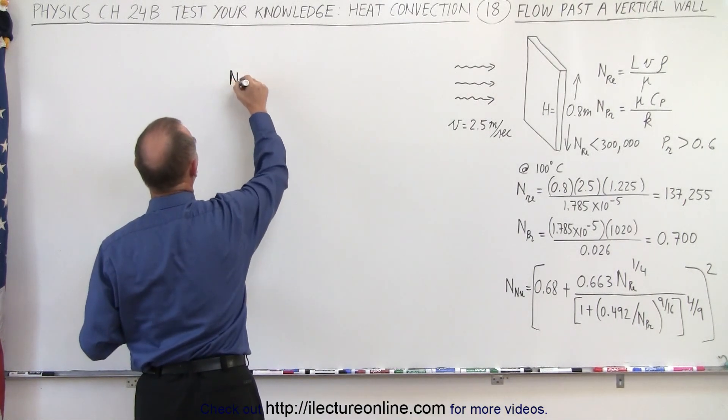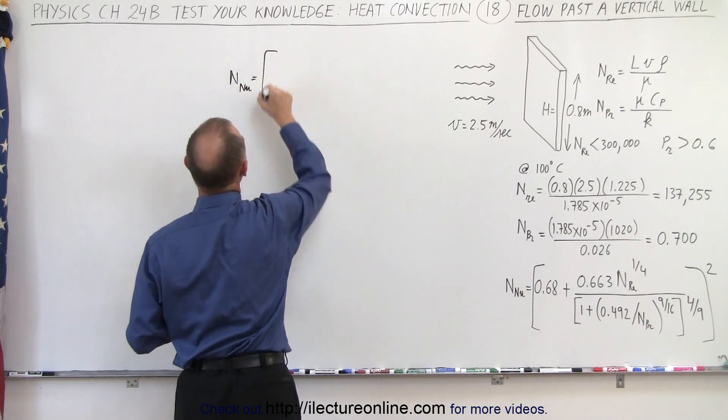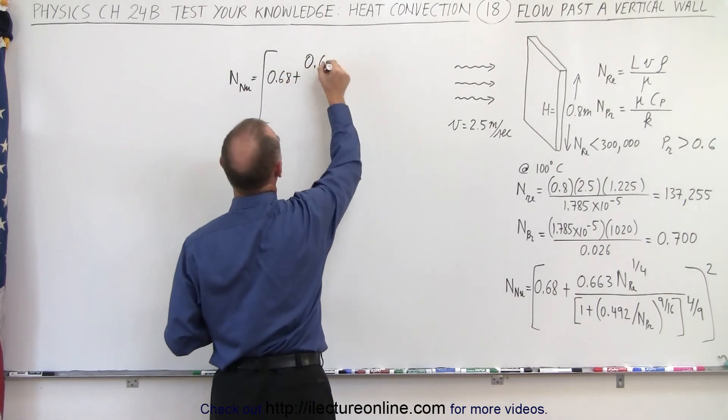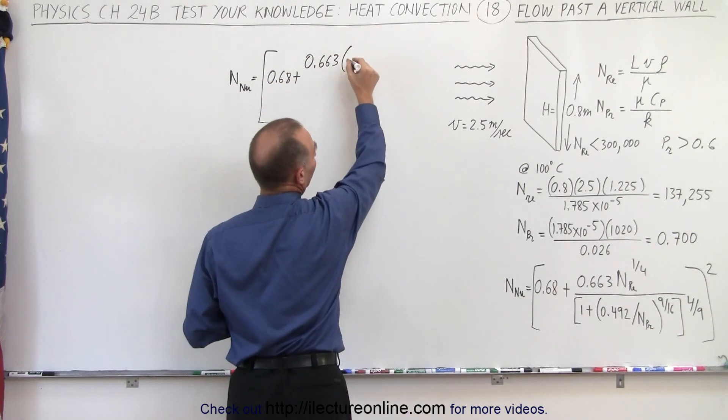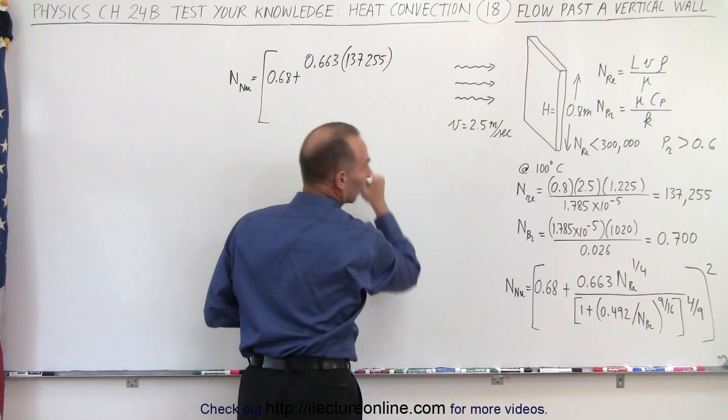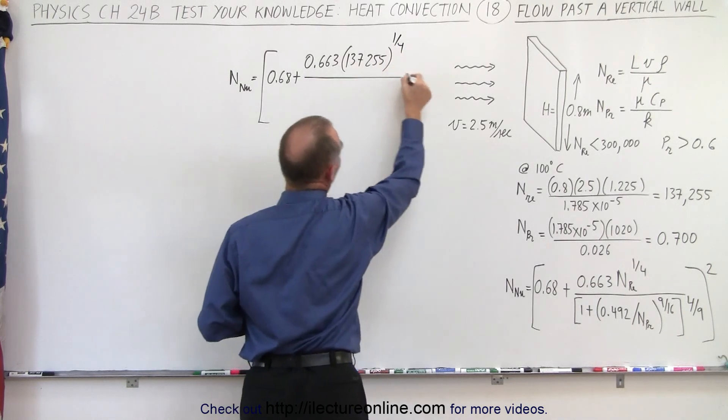Let's go ahead and plug in the numbers that we know. The Nusselt number is going to be equal to the quantity 0.68 times the Reynolds number, which is 137,255, raised to the one-quarter power.